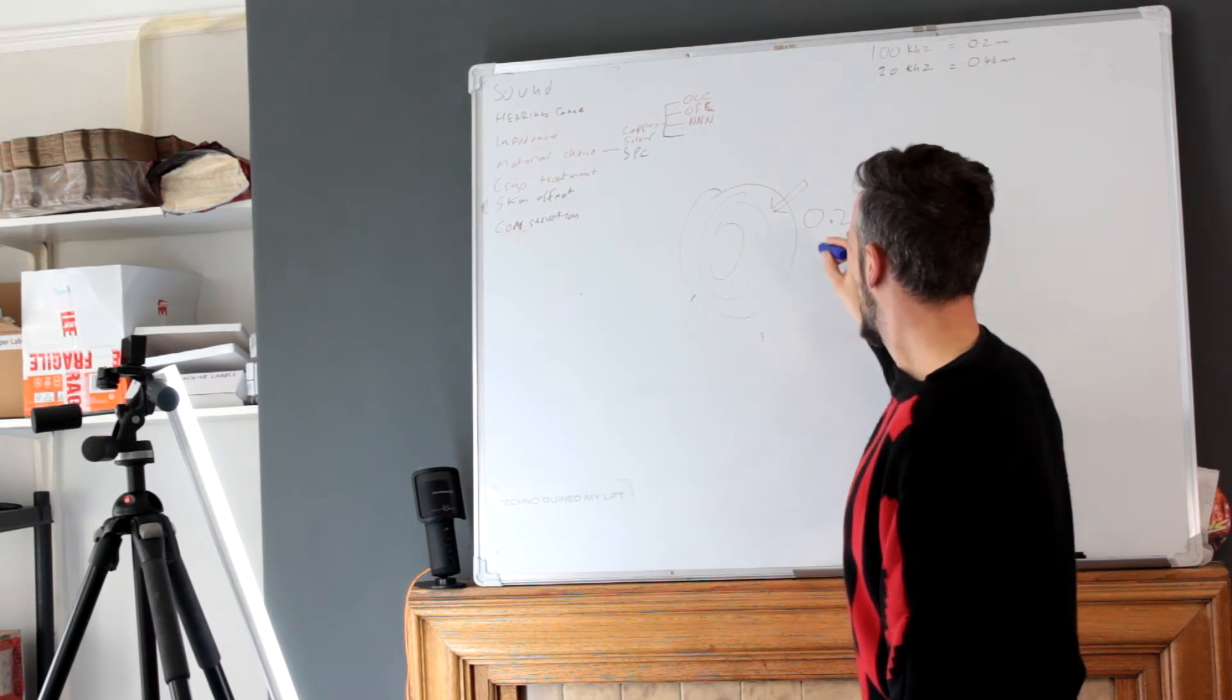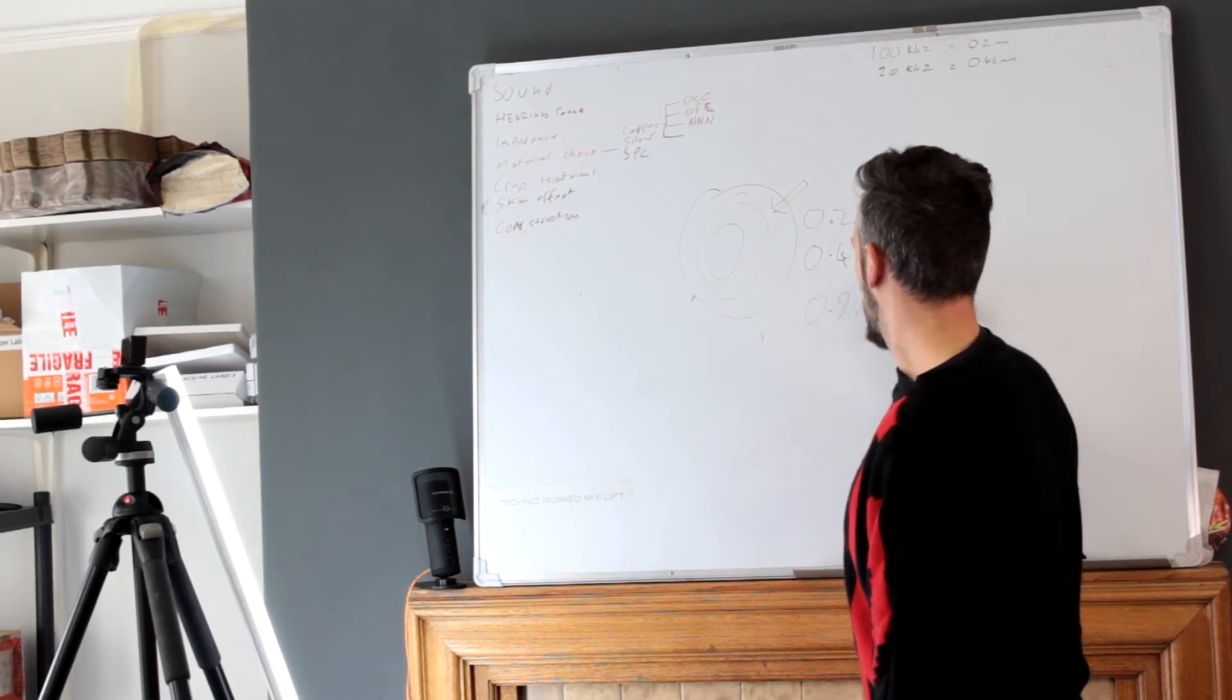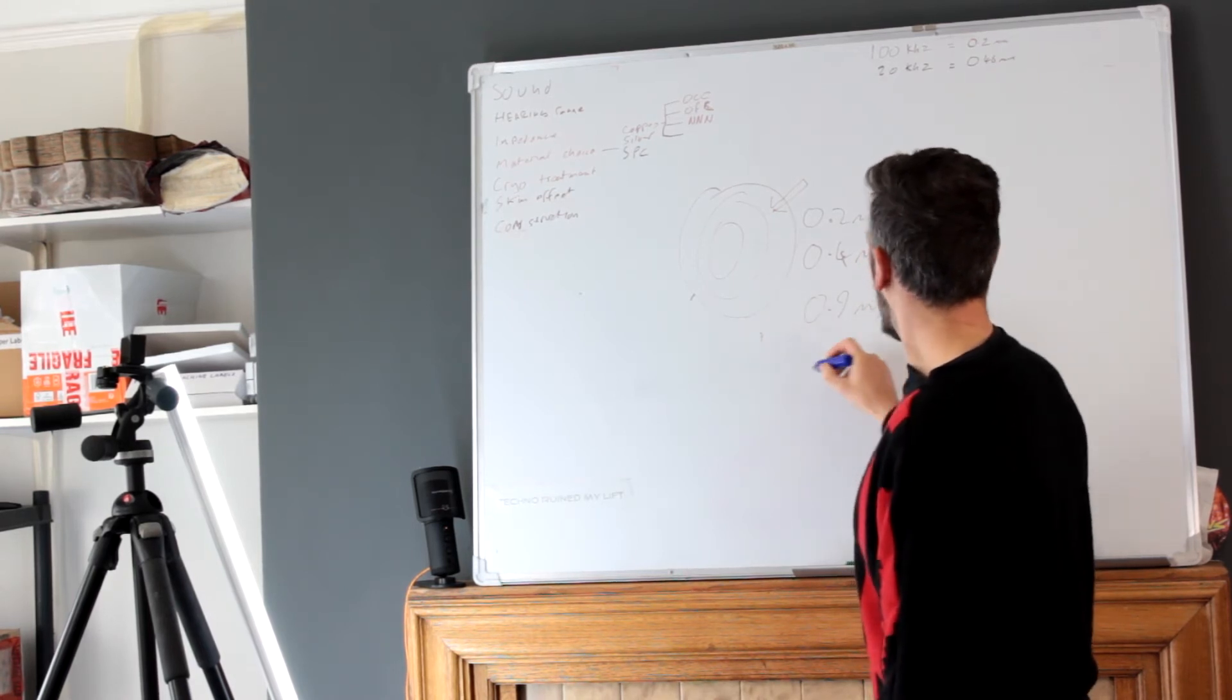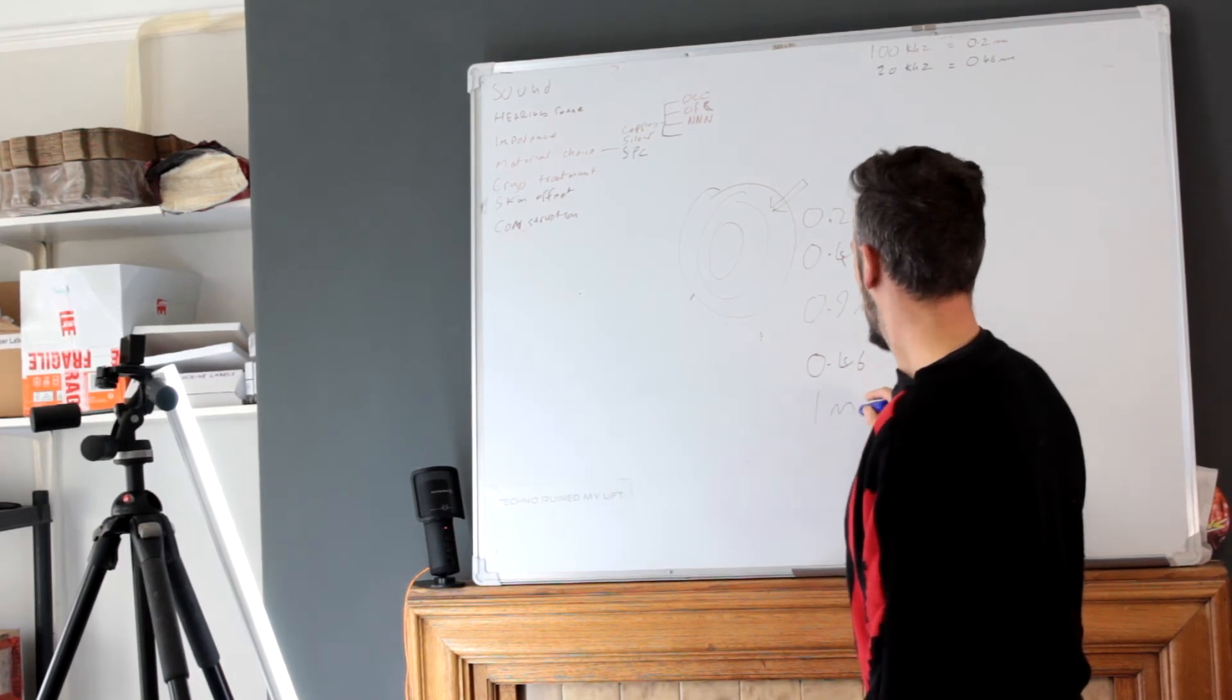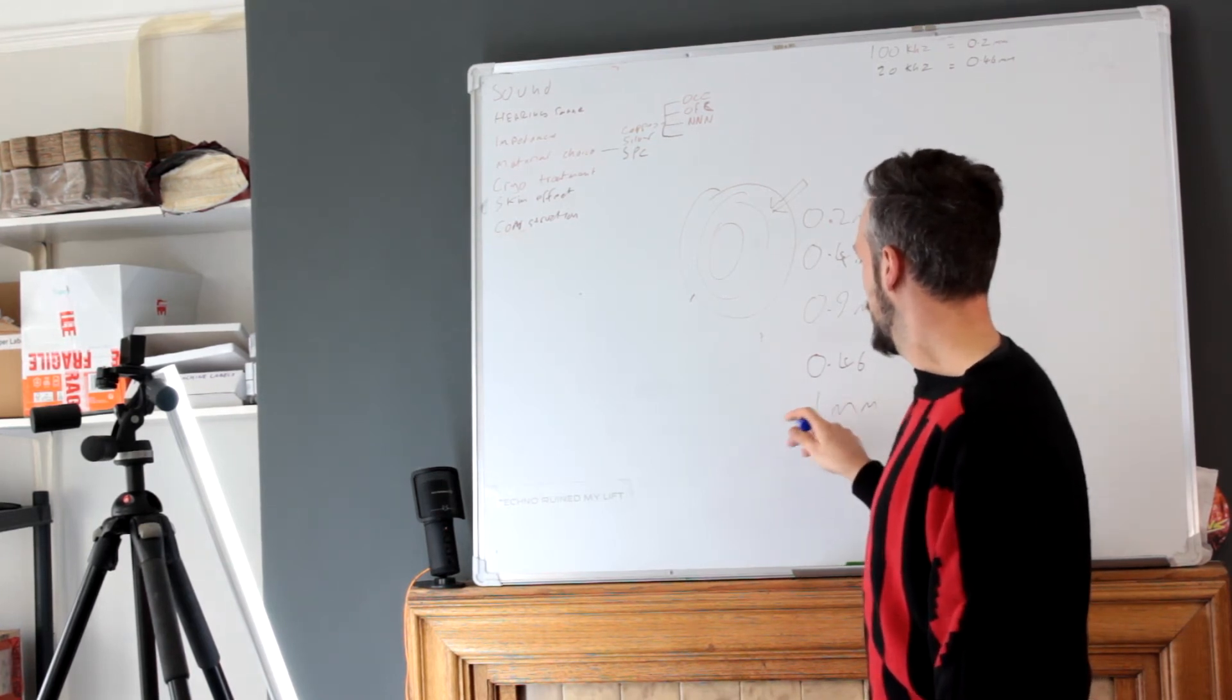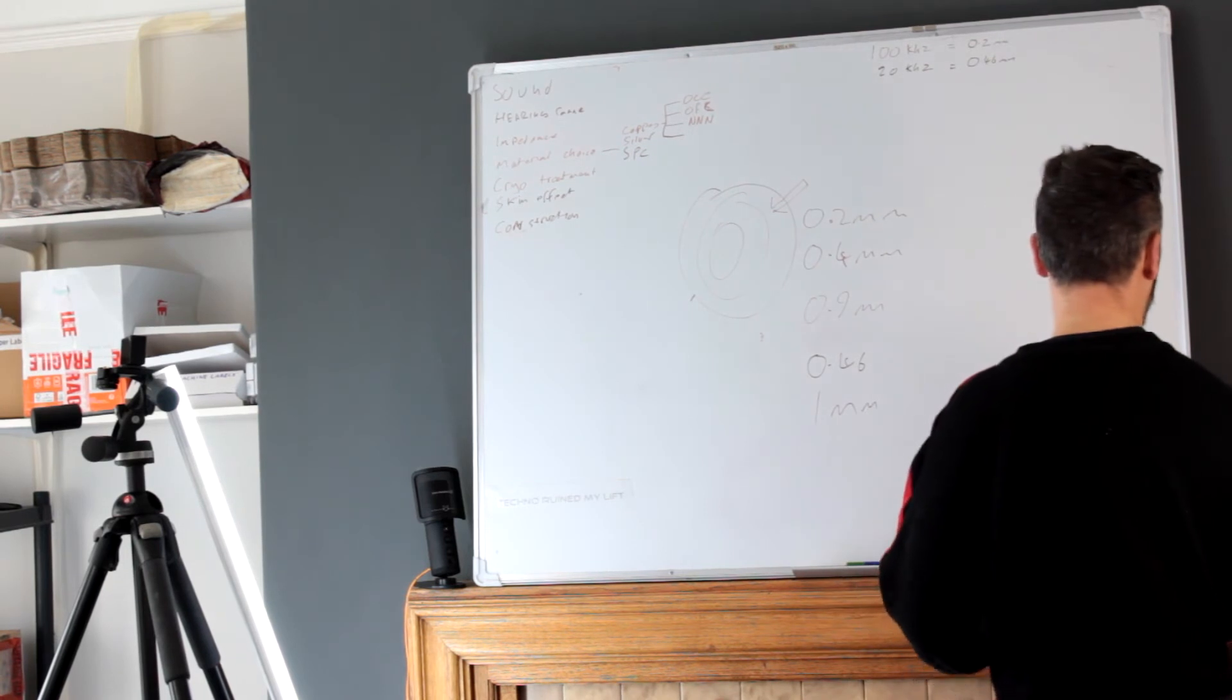For our example where we're looking at 100 kilohertz, the skin depth would be around 0.2 millimeters. And obviously you've got 0.2 millimeters this side, 0.2 millimeters that side, so 0.4 millimeters. So that would mean if you had a wire of 0.9 or more millimeters then you're going to start to see some skin effect at the 100 kilohertz range. And then if we're looking at 20 kilohertz that's around 0.46 millimeters, so basically anything over one millimeter let's say, you're going to start to see some kind of skin effect at the upper end of human hearing range.